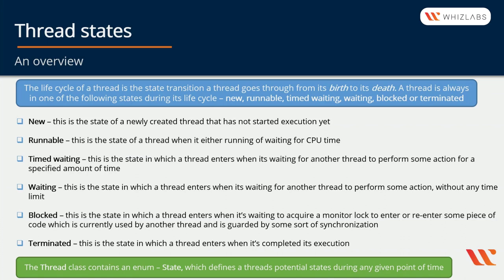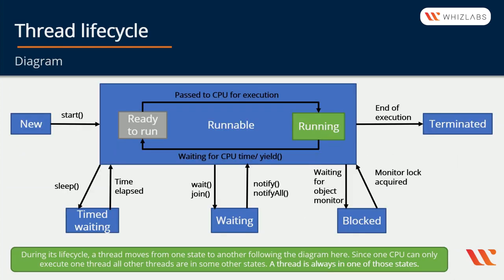Now let's see the diagram of the life cycle of a thread. During its life cycle a thread moves from one state to another following the diagram. Since one CPU can only execute one thread, all other threads are in some other states. A thread is always in one of those states. In the beginning we start with a thread in a New state. After the start method is called, it transitions to Runnable. In Runnable state a thread can either be ready to run, meaning it's waiting for CPU time, or running, meaning it's already passed to the CPU. From Runnable state the thread can go to Timed Waiting, Waiting, Blocked, or Terminated, but never back to New.